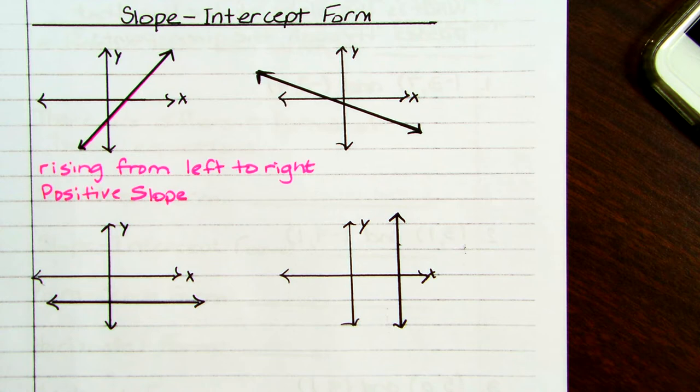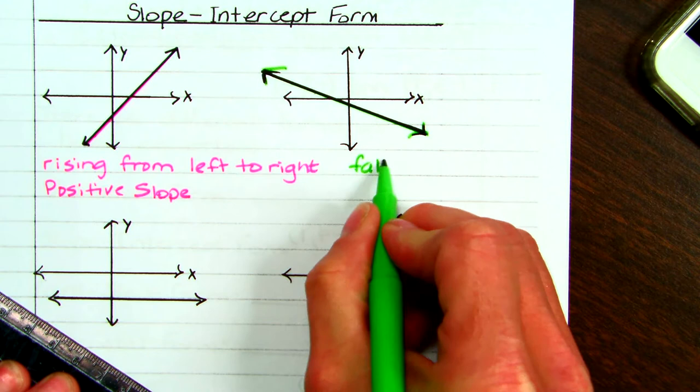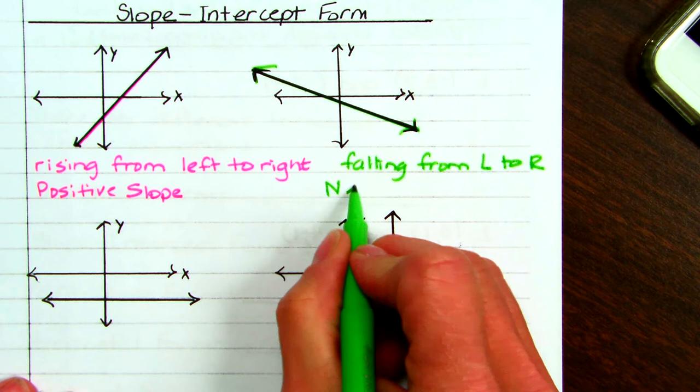In the second graph, we have a line that is falling from left to right — going down from left to right — so this one has a negative slope.